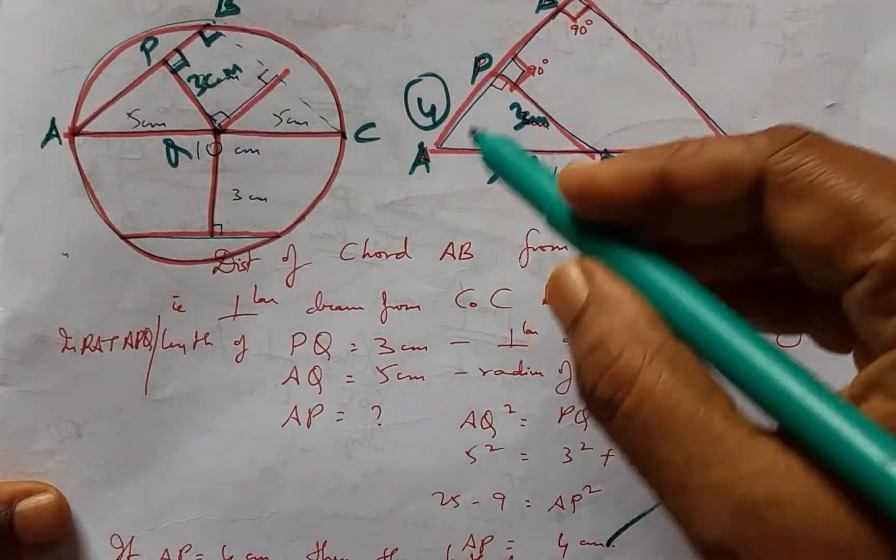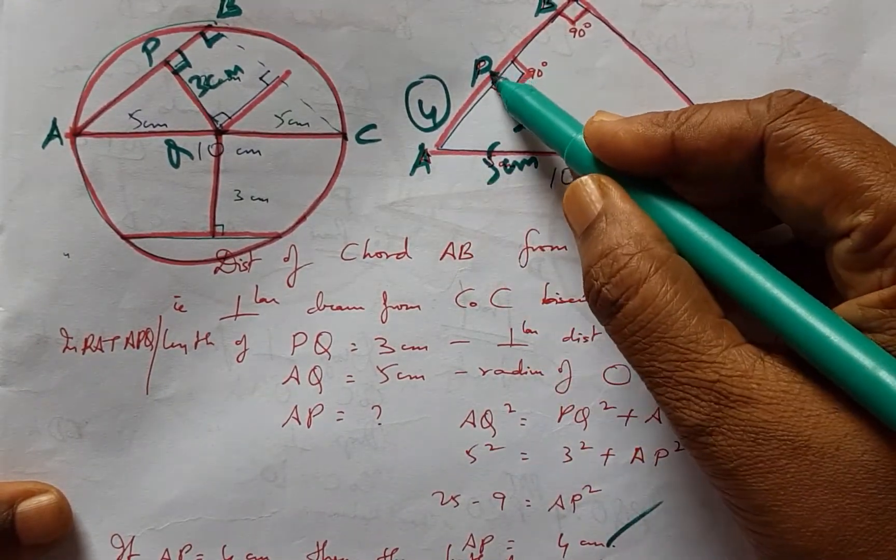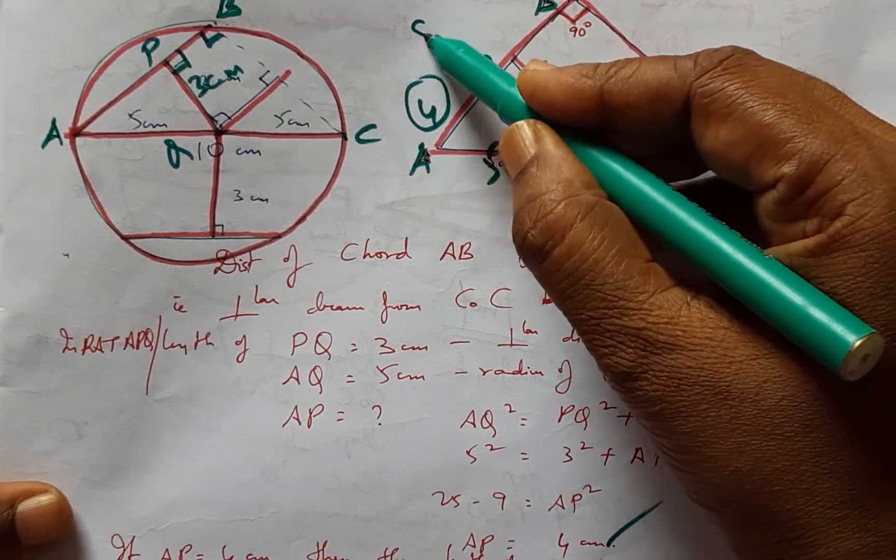Once AP has been found, we know that P is the midpoint, therefore AB is 8 cm.